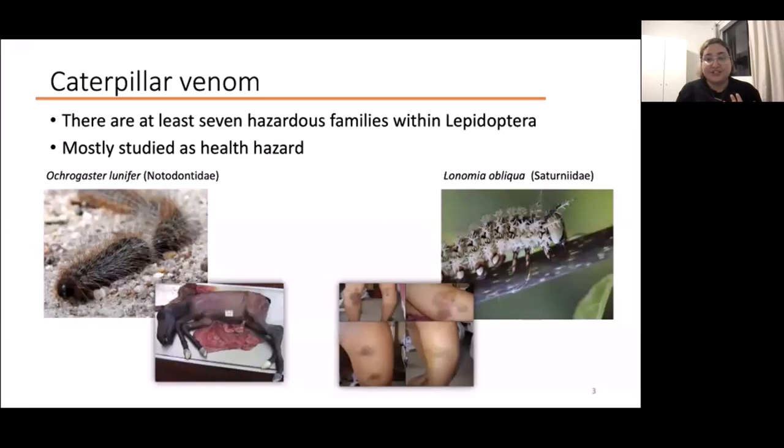This is one caterpillar that can actually kill you. The other one, the left one, Ochrogaster lunifer, is an Australian processionary caterpillar which can cause reactions in humans, but more importantly, they can cause equine fetal loss syndrome in pregnant mares, so they are very important in veterinary medicine.